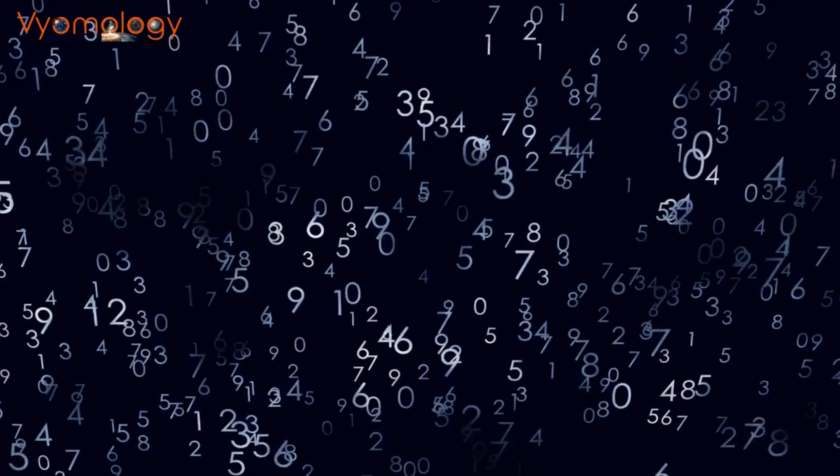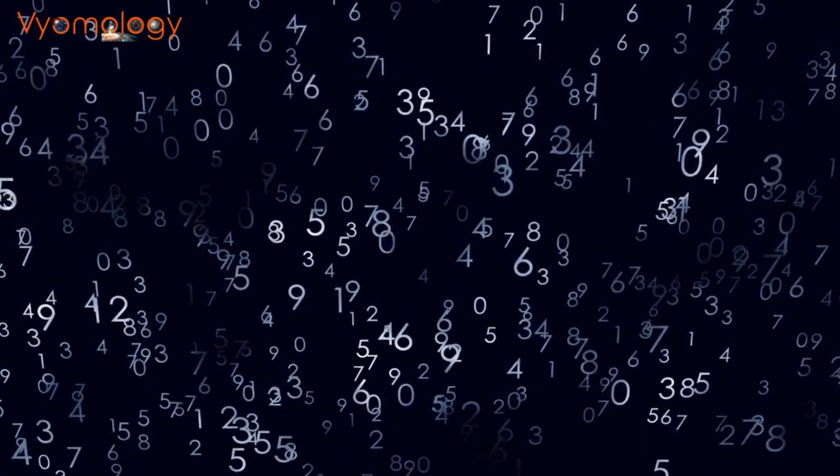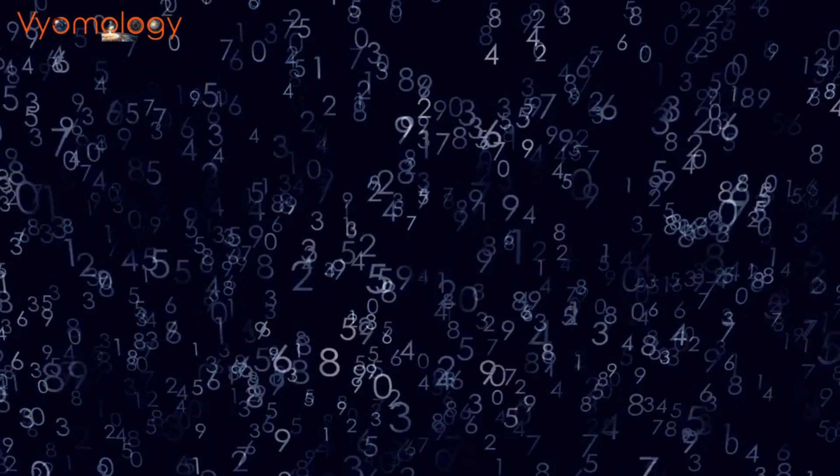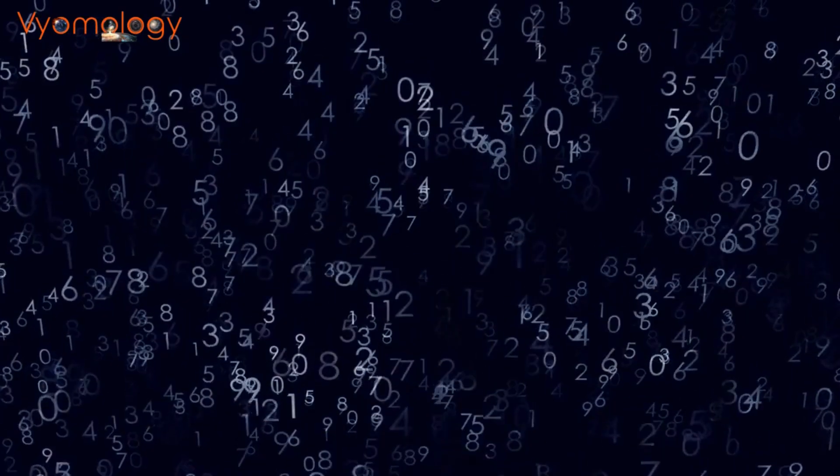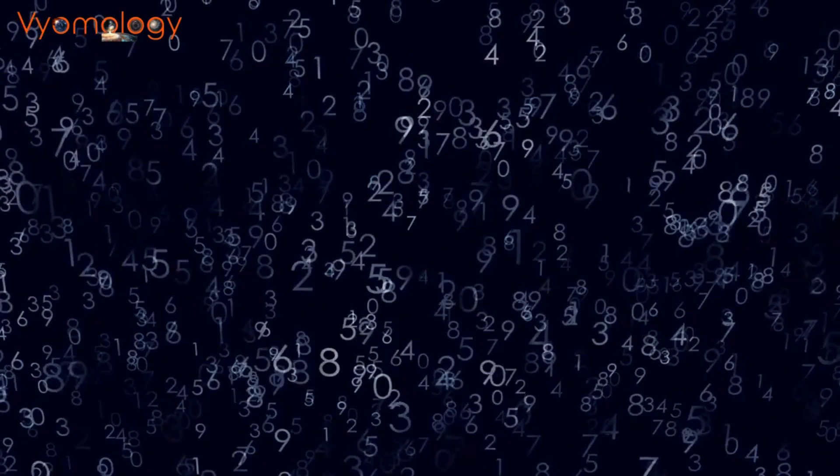He gave an exposition on zero. He wrote: if zero is added to any number, the sum is the same number. If zero is subtracted from any number, the number remains unchanged. If zero is multiplied by any number, the product is zero.